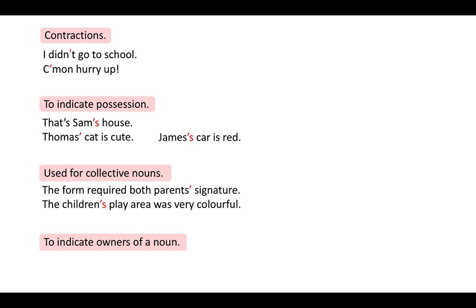An example of a colon used before a direct quote: 'She shouted: get back to class!' A comma can also be used before the direct quote — there's no difference whether you use a colon or a comma. However, make sure you remember to always start the quote with a capital letter.